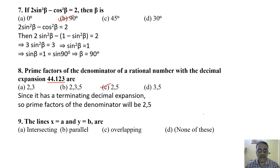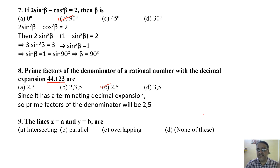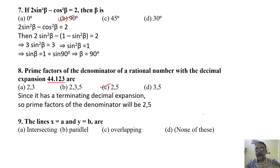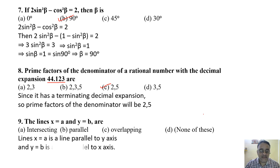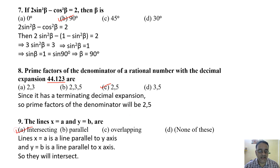Question 9: The lines x = a and y = b. x = a means x is constant, so it is parallel to the Y-axis. y = b means y is constant, so it is parallel to the X-axis. Lines parallel to the Y-axis and X-axis respectively will intersect each other. So they are intersecting lines, and option A is correct.